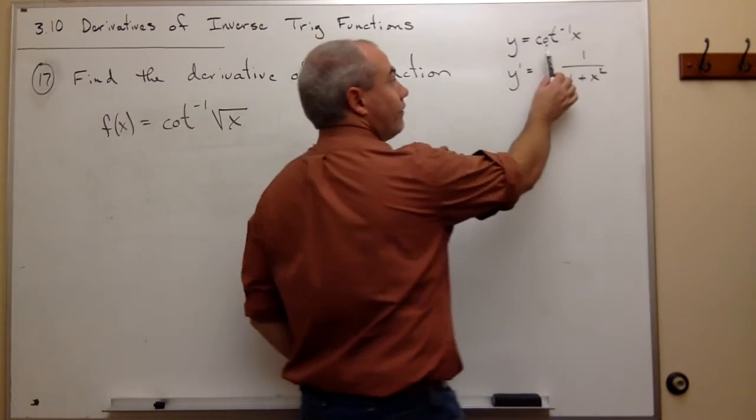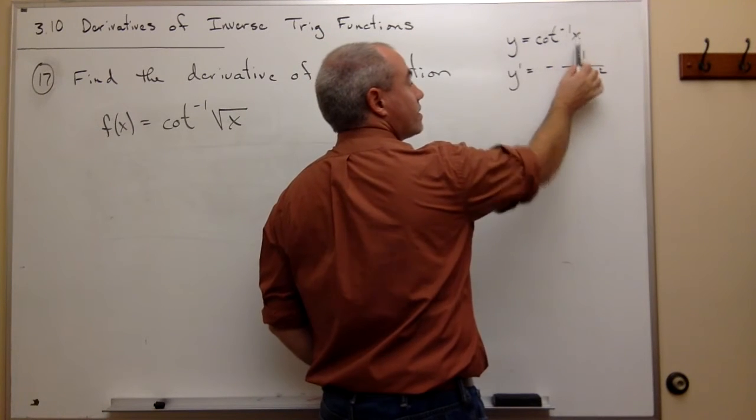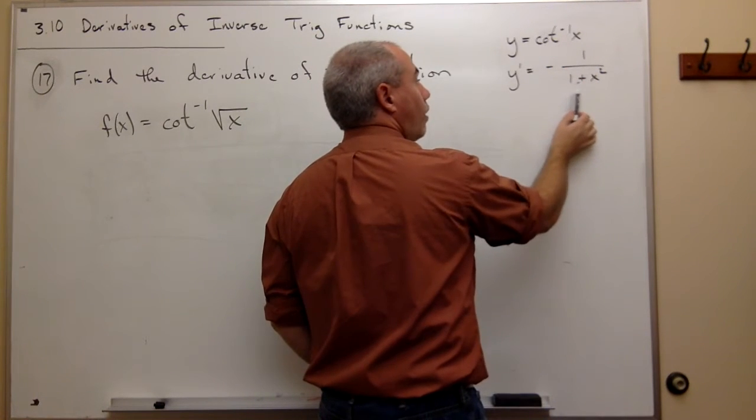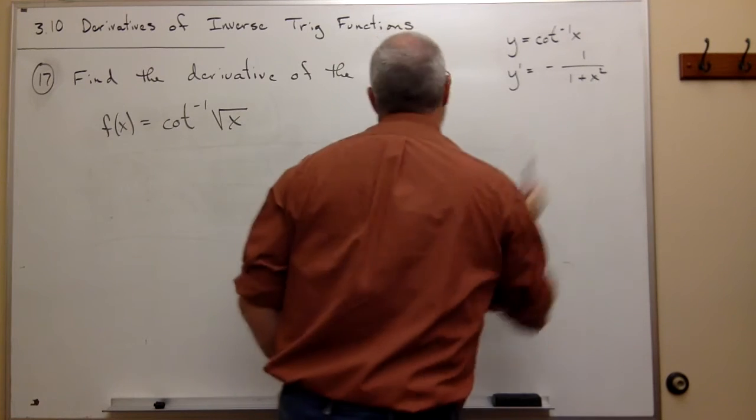So if I take the derivative of cotangent inverse of something, it's negative 1 over 1 plus that something squared.